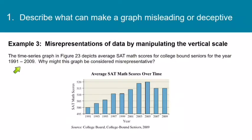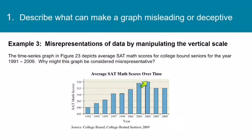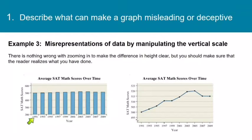Let's look at this example. The time series graph in Figure 2.3 depicts average SAT math scores for college-bound seniors for the years 1991 to 2009. Why might this graph be considered misrepresentative? Again, it's a similar problem to the one we saw in the previous example. The vertical scale starts at 495, so some bars appear very short while others look much, much taller — I would guess four or five times taller — giving the idea that there's been a large increase in scores.